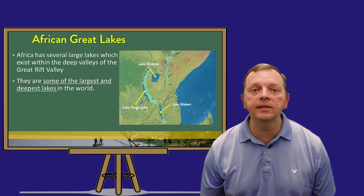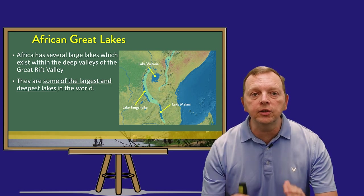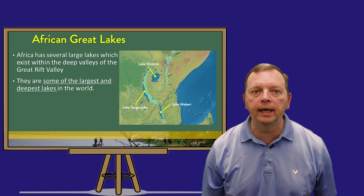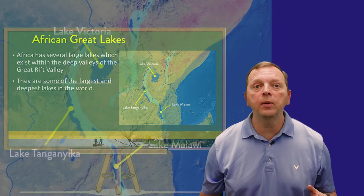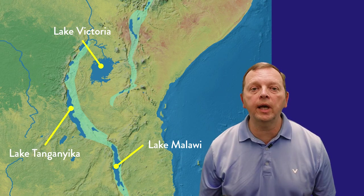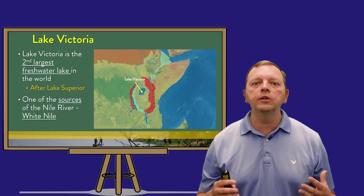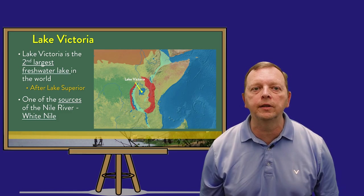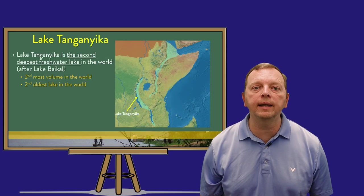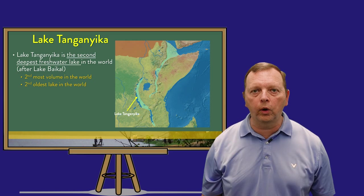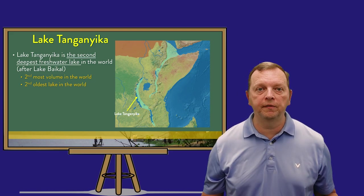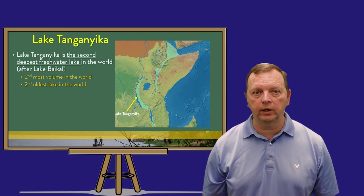Another feature of a Rift Valley is that it creates very deep lakes. Essentially, the valley created as the diverging plates separate will fill up with water, creating these lakes. In the Great Rift region, we find three major lakes: Lake Victoria, Lake Tanganyika, and Lake Malawi. Lake Victoria is the second largest lake in the world by surface area, and it is also the source of the White Nile. Just to the west of Lake Victoria, we find Lake Tanganyika, which is the second deepest lake in the world at about 4,500 feet — just under a mile deep. It also has the second most volume and is the second oldest lake in the world.